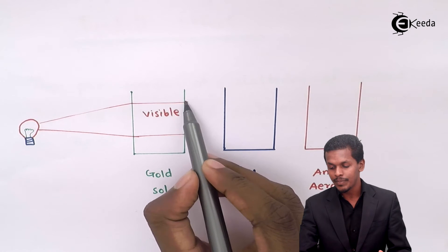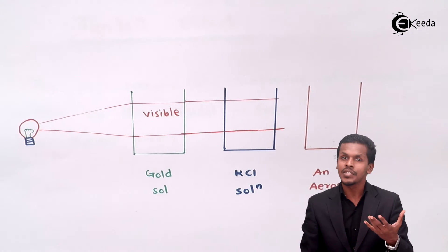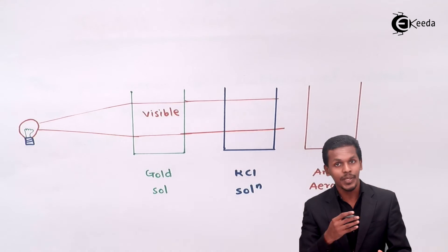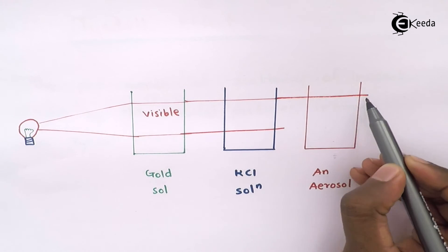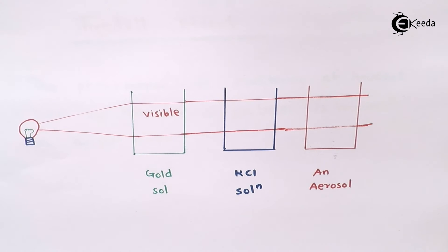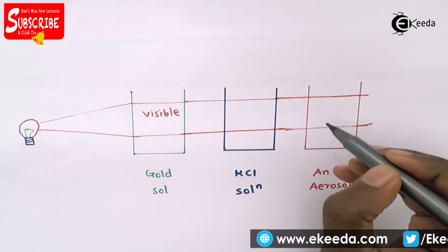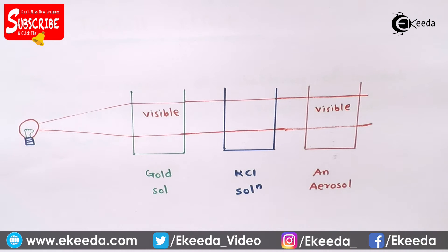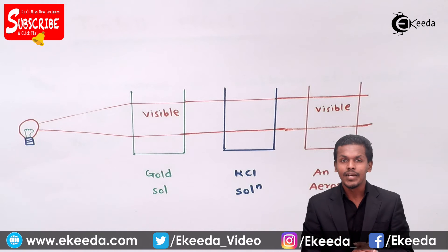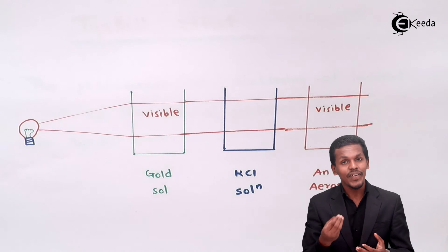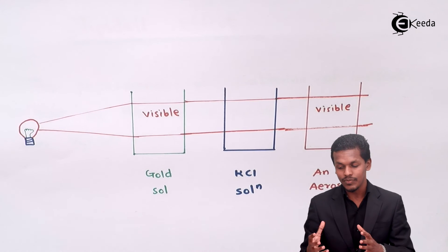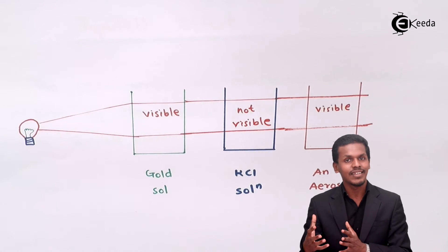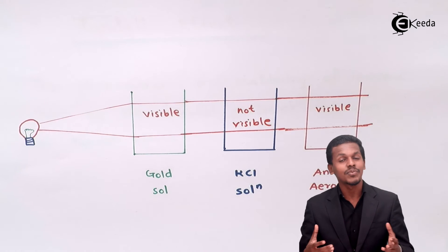After passing through the gold sol, when that light passes through the casein solution — which is a true solution — we cannot see the beam of light. But when the light is passed through the aerosol, which is a colloidal dispersion, the light becomes visible again and scattering occurs. So the colloidal particles in the aerosol can be seen, while the true solution does not show this effect. This was the example illustrating the Tyndall effect.